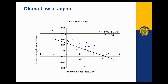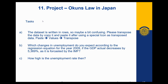If the growth rate of GDP is very positive, the change in the unemployment rate will be negative — the unemployment rate will be decreasing. Whereas if the growth rate of GDP is negative, the unemployment rate will increase. The tasks are: first, transpose a row-based dataset; second, create a linear model to answer what change we'd expect if GDP decreases by 5.369 percent; and finally, determine what the unemployment rate then is.